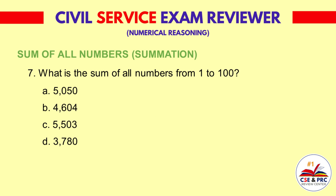Question 7: What is the sum of all numbers from 1 to 100? a. 5,050  b. 4,604  c. 5,503  d. 3,780